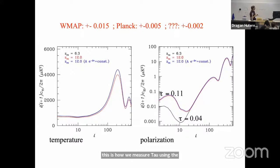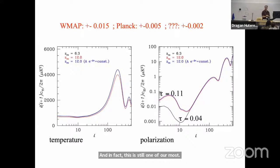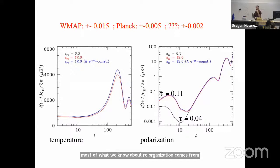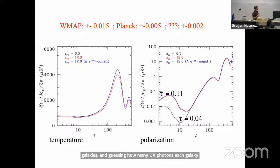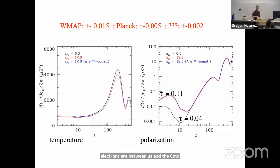This is still a unique constraint on reionization. Most of what we know about reionization comes from reading the tea leaves on Lyman-alpha absorption profiles and counting galaxies and guessing how many UV photons each galaxy produces. Whereas this is telling us directly how many electrons there are between us and the CMB — so this is an extremely powerful constraint on reionization.